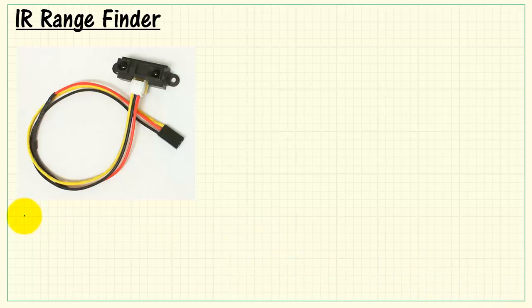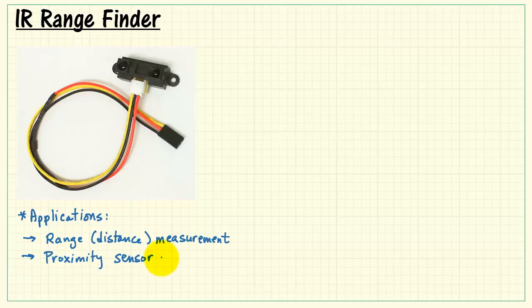Here's some applications for an infrared rangefinder such as this device. You can use it for range and distance measurements, especially for robotics applications. That's a very important piece of information. You could use it as a proximity sensor, and you could also use this as a touchless switch.